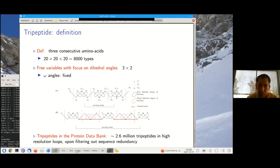And now, if you go to the database of protein structures, meaning the protein databank, if you collect tripeptides along all high-resolution structures, once some redundancy has been filtered out using sequence homology, there is on the order of three million tripeptides in high-resolution loop structures, which is quite a lot of information.